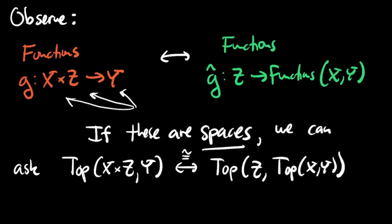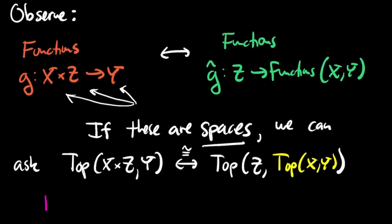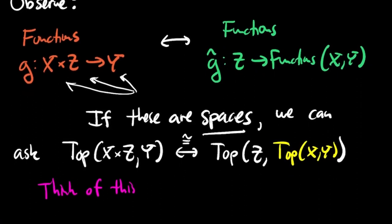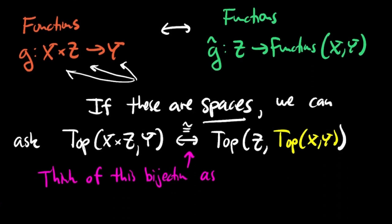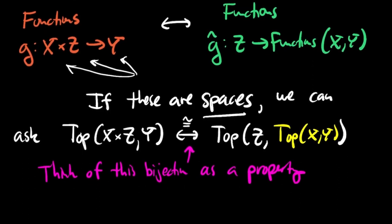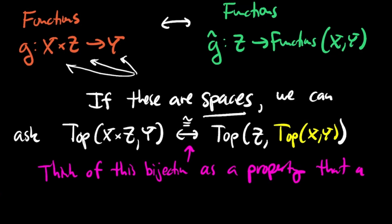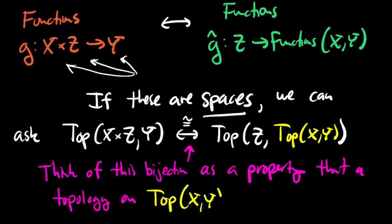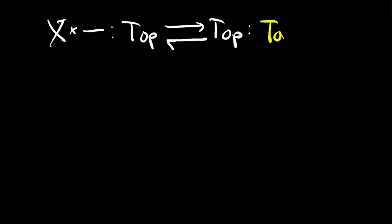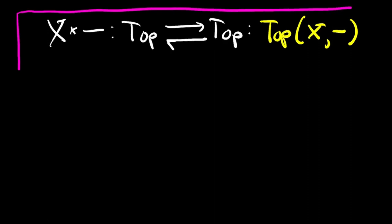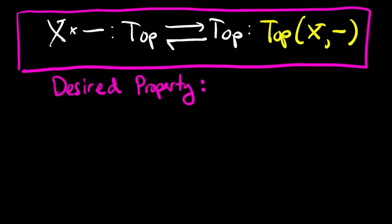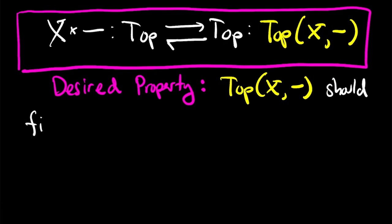If these sets are topological spaces, I'd like to put a topology on the space of continuous functions from x to y so that continuous functions from z into that space correspond bijectively to continuous functions from x cross z into y. I'm thinking of this bijection of sets as the desired property I want — like some kind of equation — and the topology on the set of maps from x to y as the variable I'm trying to solve for. Expressed in terms of adjunctions, what we seek is a right adjoint for the functor from topological spaces to topological spaces defined by crossing with x.